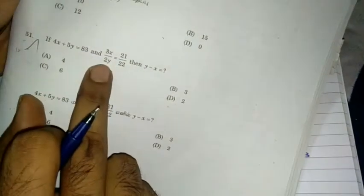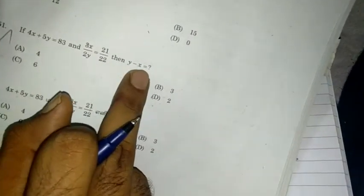Let's see. If 4X plus 5Y equals 83, and 3X by 2Y equals 21 by 22. Then, Y minus X. So, X and Y value is going to get the difference number. So, let's see. Let's cross this. So, 66X equals 42Y. Now, how do we do this? 66X minus 42Y equals 0.